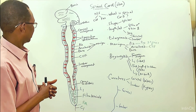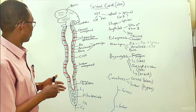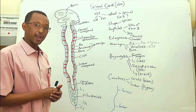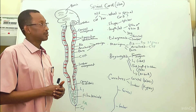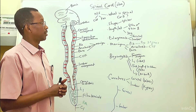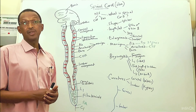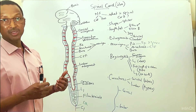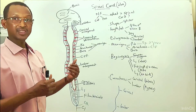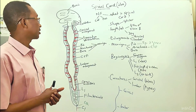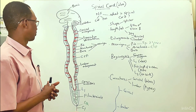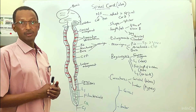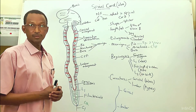That covers the basic information about the spinal cord. Next time, the internal structures of the spinal cord will be discussed, including the descending and ascending tracts. Thank you very much.